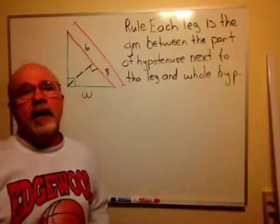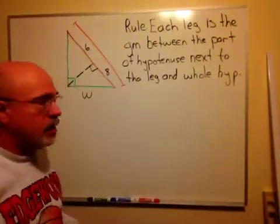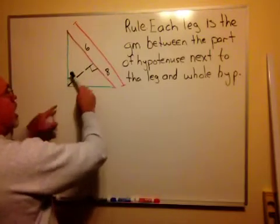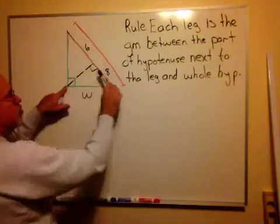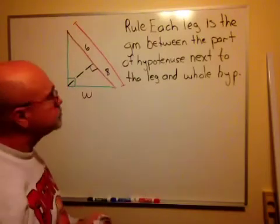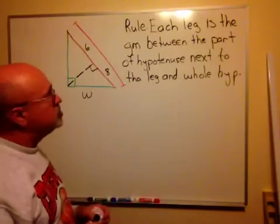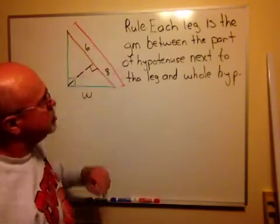When the altitude is drawn to the hypotenuse of a right triangle, in this case, this dashed segment in black is the altitude drawn to the red segment, which would be the hypotenuse of the triangle. It creates some geometric mean relationships, and one of them is expressed in this rule.